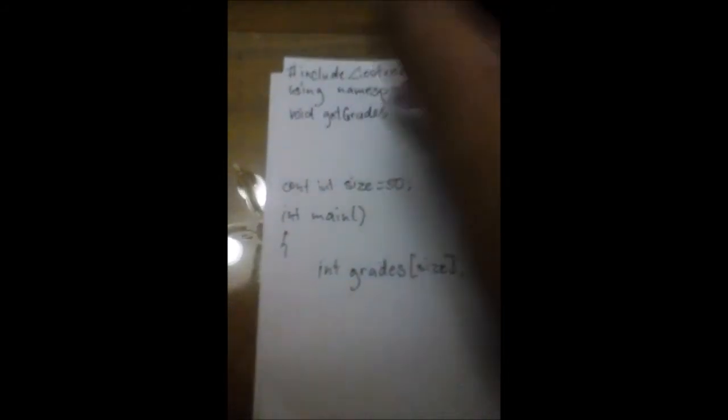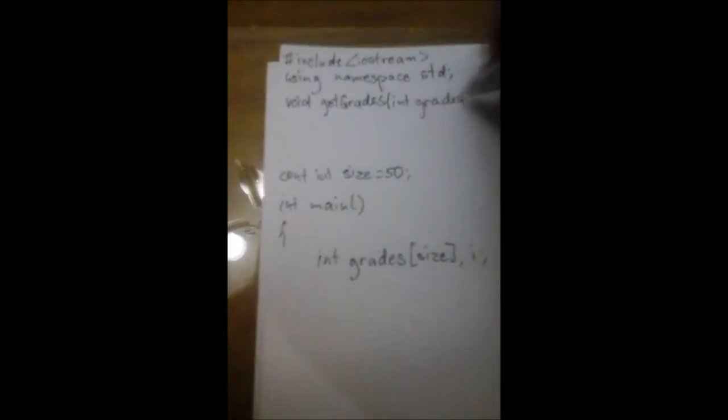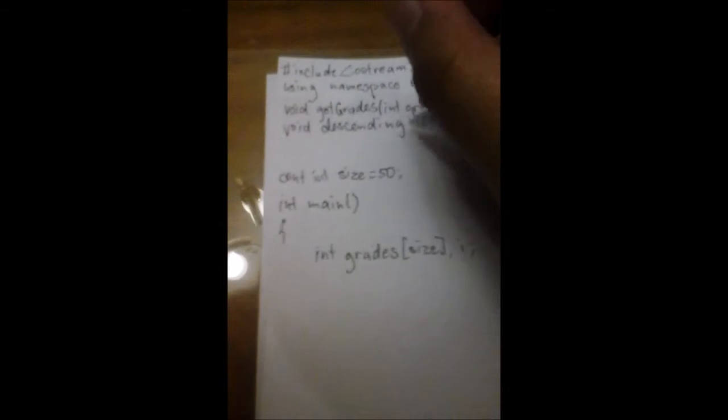So, we go back to our main and declaring our functions and calling it. First off is, let's declare our functions. So, we just copy what we wrote there, plus a semicolon. Okay. Good. Good. So, another is void descending. Good.